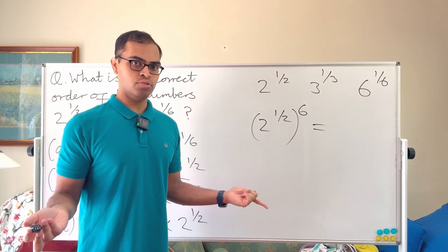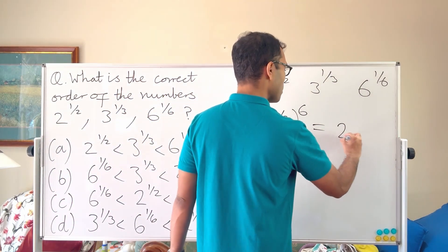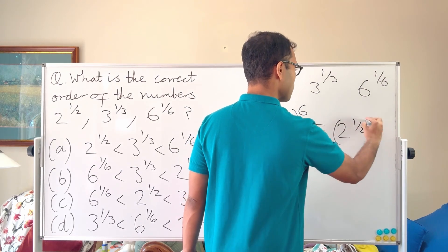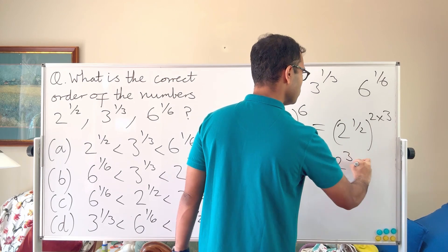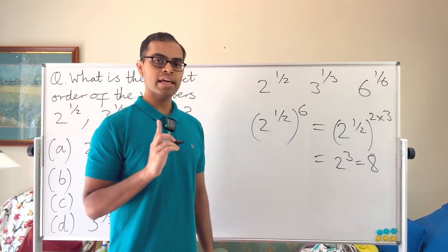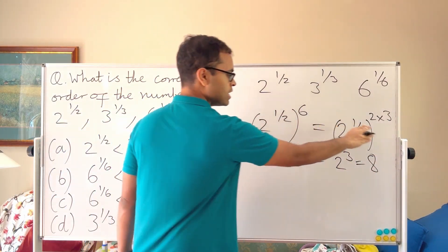But if we power 2 power half by 6, the point is that if you power 2 power half by 2 you get 2, right? So powering 2 power half by 6 is the same as powering 2 power half by 2 and then powering it by 3, which is just going to equal 2 cube, which is 8. That's why I powered by 6 to make it a nice number - it's going to work for all of these.